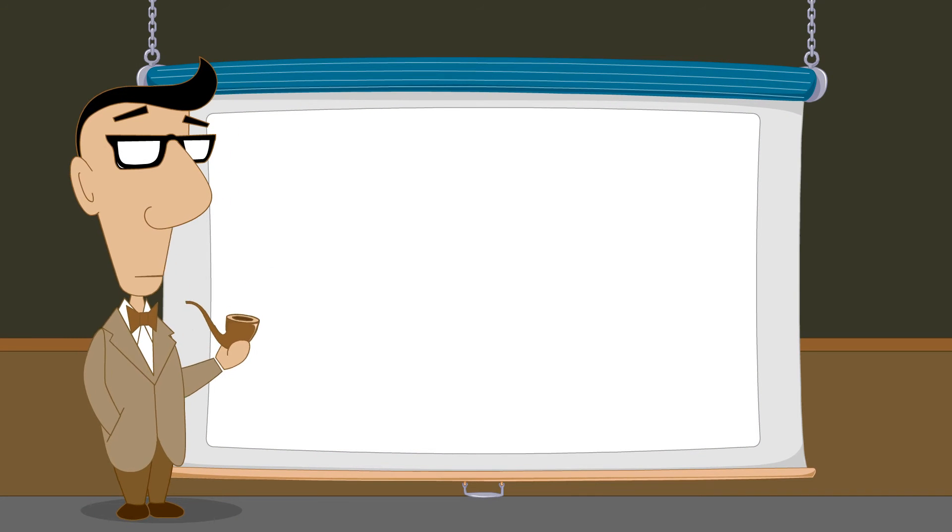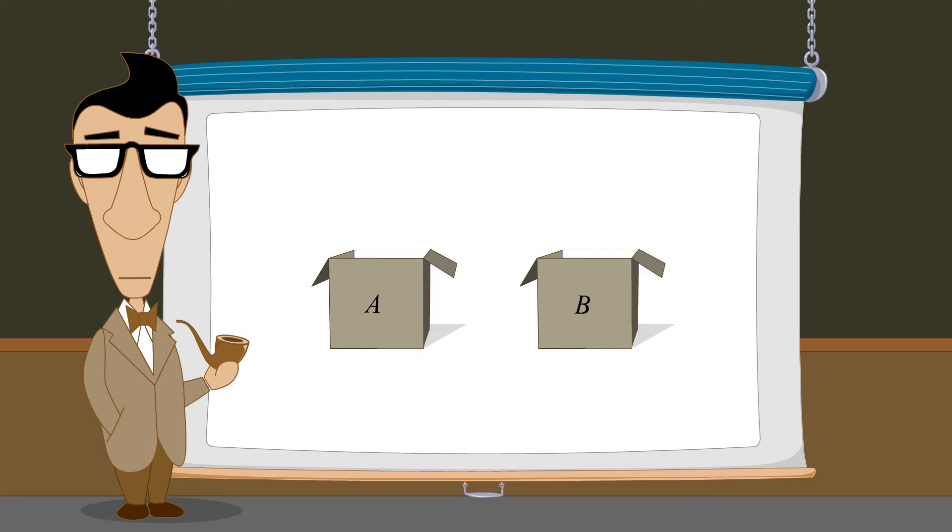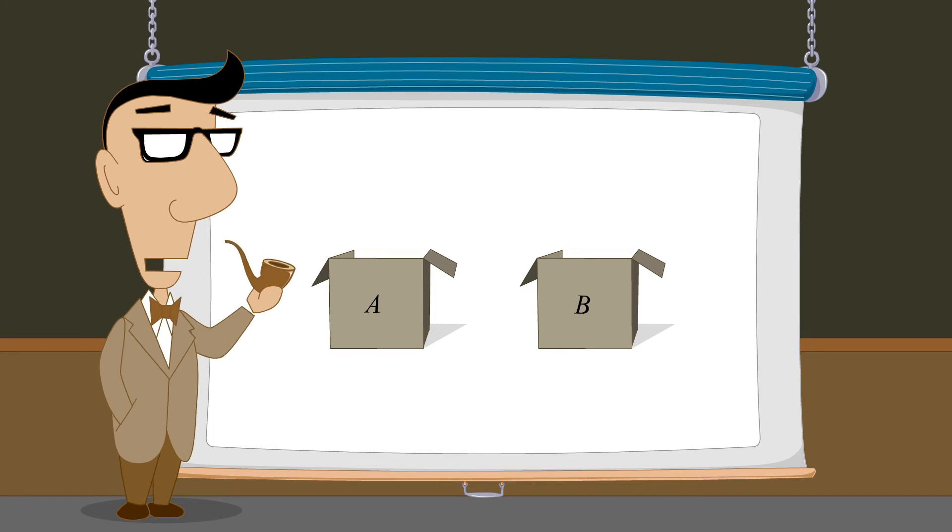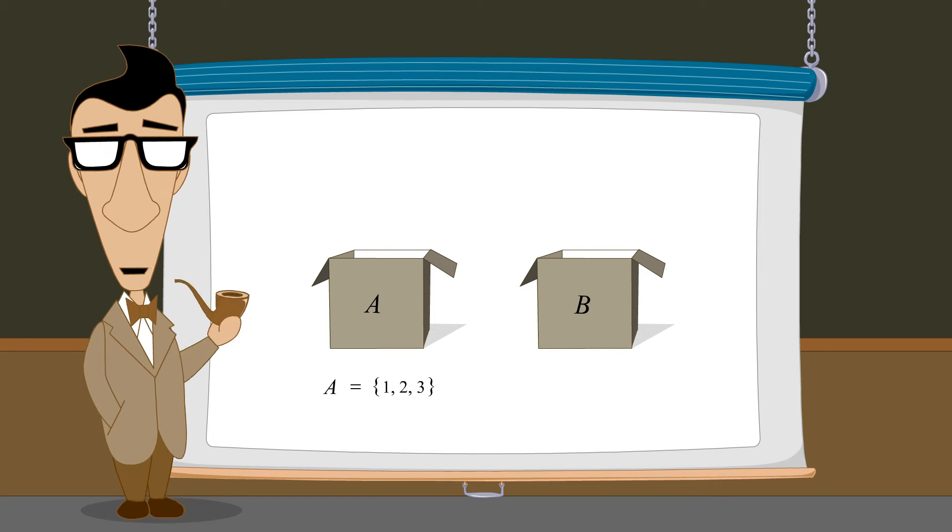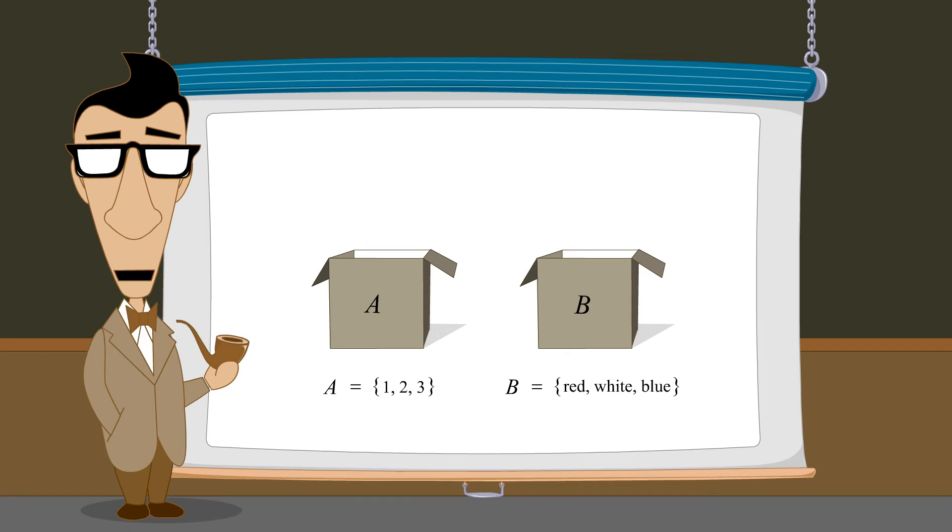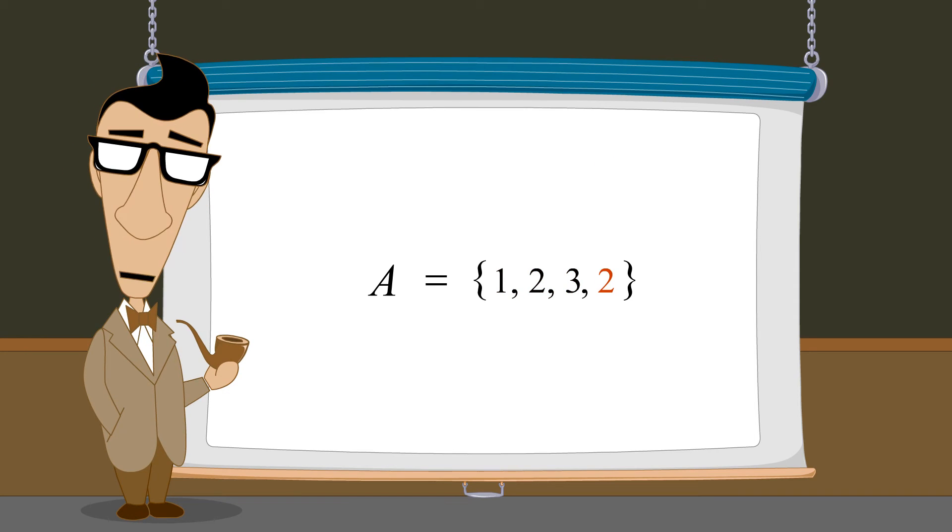We define a set by specifying all its members. There are several ways to do this. One way is by writing a list of all the members of the set separated by commas and enclosing the list in curly brackets. For instance, we can define set A to be a set whose members are the numbers 1, 2, and 3. Or we can define set B to be the set whose members are the colors red, white, and blue. An important rule to remember when listing the members of a set is that each element must be unique. No two members of a set may be the same.